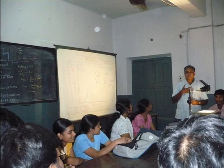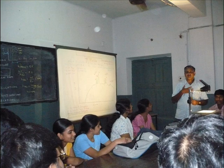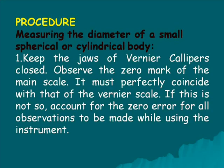Procedure: Measuring the diameter of a small spherical or cylindrical body. Keeping the jaws of the Vernier calipers closed, observe the zero mark of the main scale. It must be perfectly coincided with that of the Vernier scale.